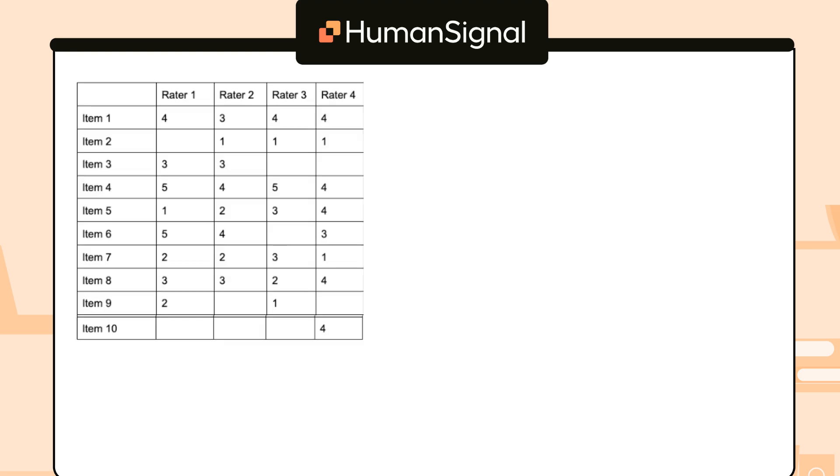Let's say you have 4 raters rating 10 items. In last week's example, we asked raters to rate yes or no. This time, we'll ask raters to rate each item on a scale of 1 to 5. The first thing we need to do is prepare our data for calculation. Krippendorff's Alpha only works when you have more than one rating on an item, so we need to remove any items that only have one rating. In this case, that's item 10.